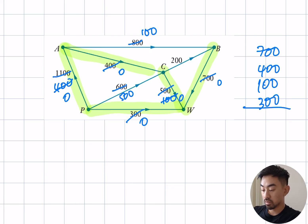So let's add up all these. 700 plus 400 is 1,100. Plus 100 is 1,200. Plus 300 is 1,500. So 1,500 is my max flow.